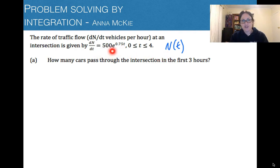So if we integrate the rate function, not only will we get back to our original function which gives us the number of cars, but if we work between a definite integral, then the area that we're calculating there will work out the number of cars that we're after at a particular time. So the question, the first part here is how many cars pass through the intersection in the first three hours.